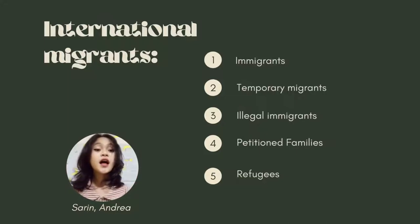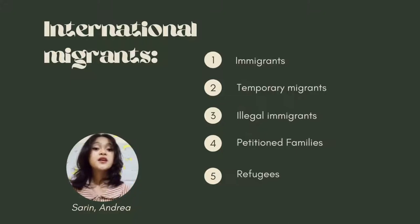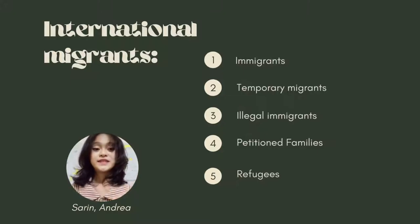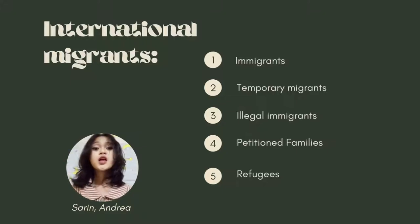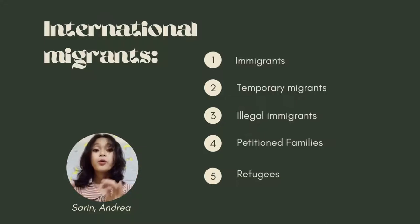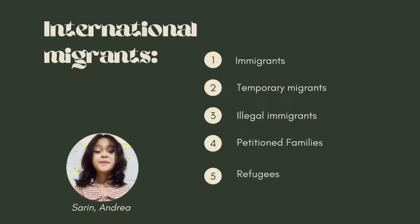Temporary migration could be for seasonal employment. Immigration occurs when a person crosses an international border and becomes a permanent resident in another country. For example, people can come to Australia for a temporary stay for a range of purposes such as visiting for tourism, attending a conference, medical treatment, study, skilled work, working holidays, or other specialist activities. That's all for my report, I hope you understood it. Thank you.